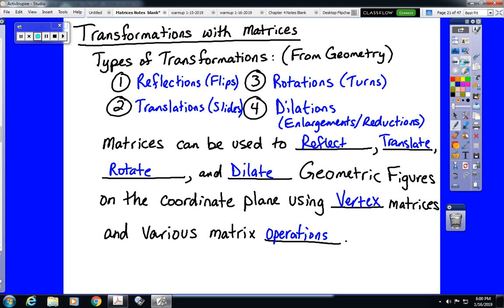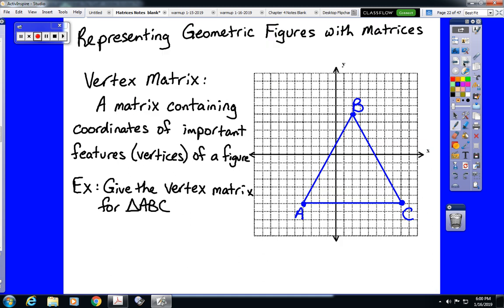So, in order to do this, we first have to understand how to use a matrix to represent a shape. Here we have a triangle ABC, and we're going to talk about how to turn that picture on the coordinate plane into a matrix that we can use to represent it.